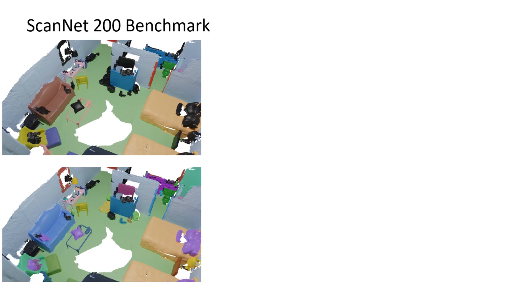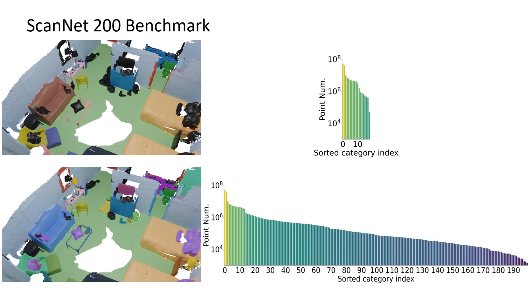ScanNet 200 introduces an order of magnitude more categories than its predecessor and thus reveals the natural class imbalance that exists in real-world scenes. For example, chairs and desks are much more common than soap dishes.